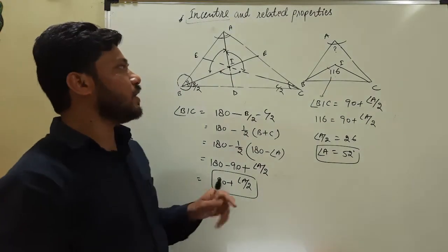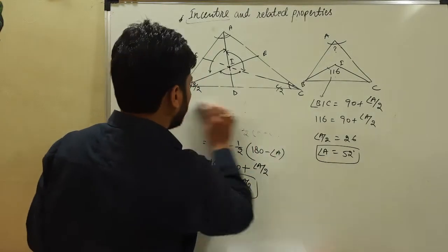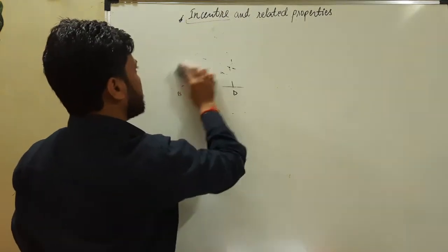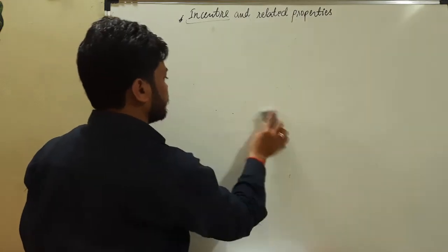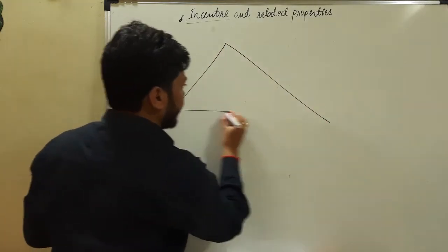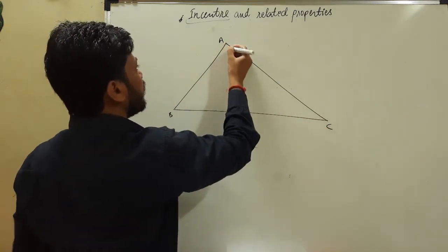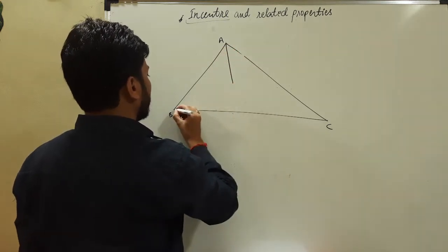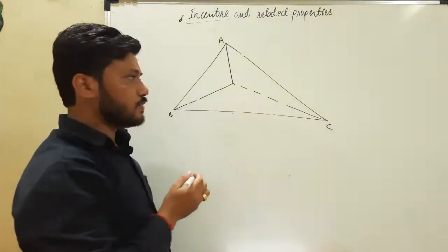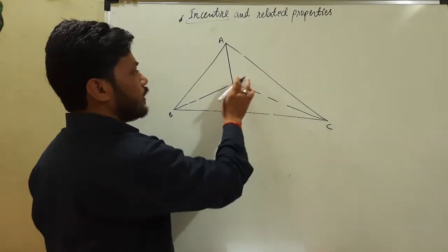This is all about the property of incenter related to angles. One more property is involved here, and that is also very important. Let us discuss that property. Let us draw a triangle once again — triangle ABC. The angle bisectors of angle A, angle B, and angle C all intersect at a certain point, which is I, the incenter.